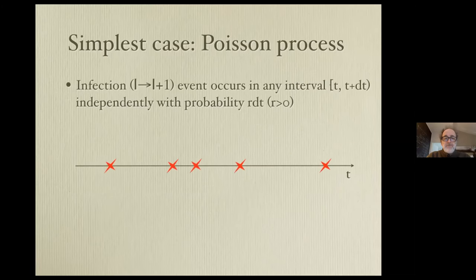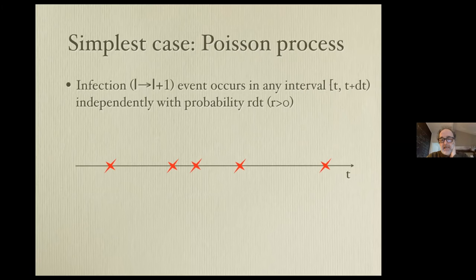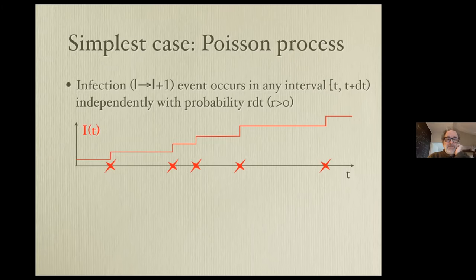Let's start with the simplest case: one individual who may get infected with a constant rate r. The probability of a new infection in the interval dt is r·dt, and events are independent. On a timeline, these events can be represented by star symbols, and each time there is an event the number of infected individuals increases by one.